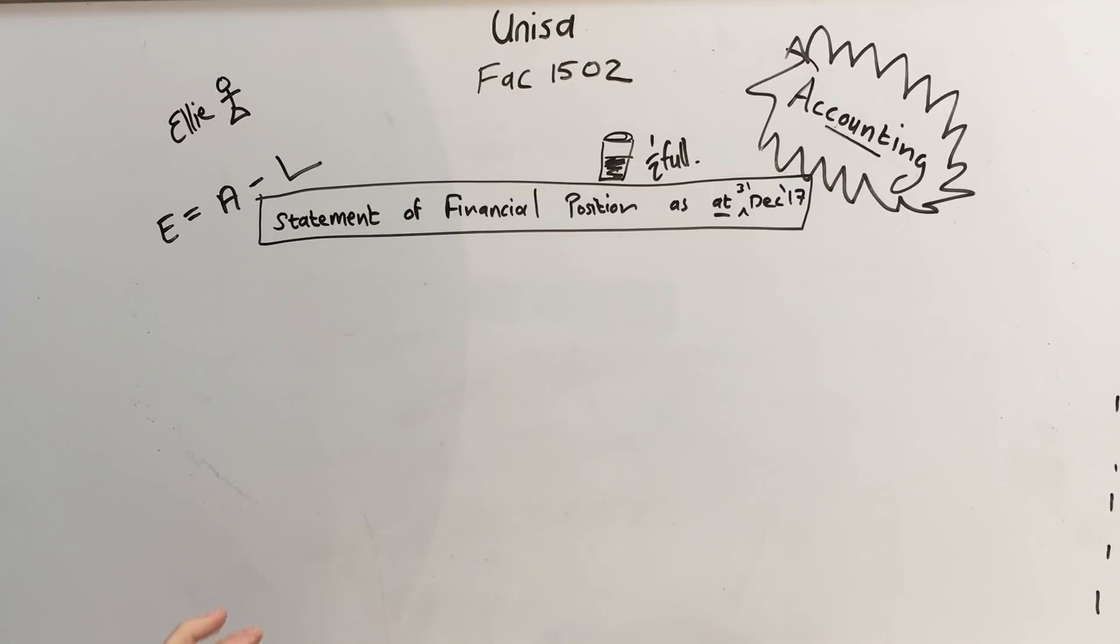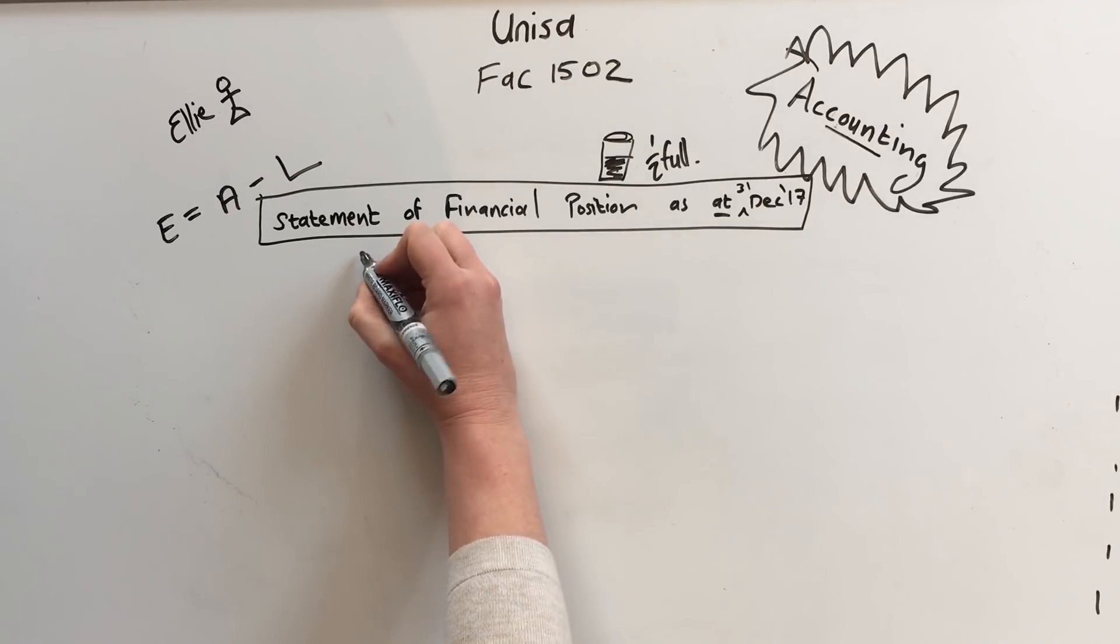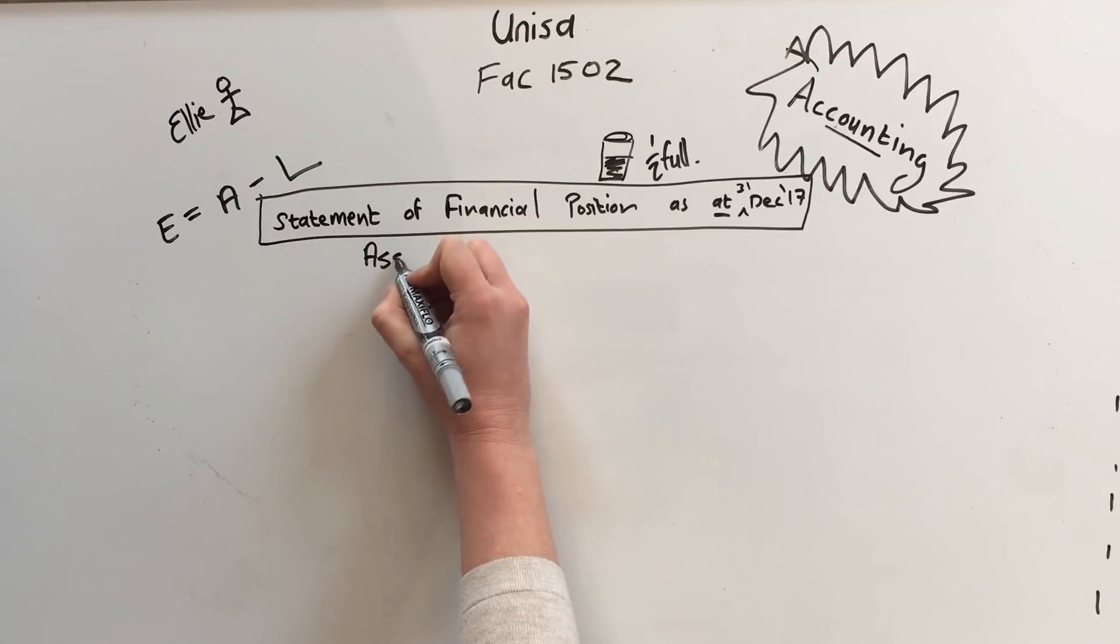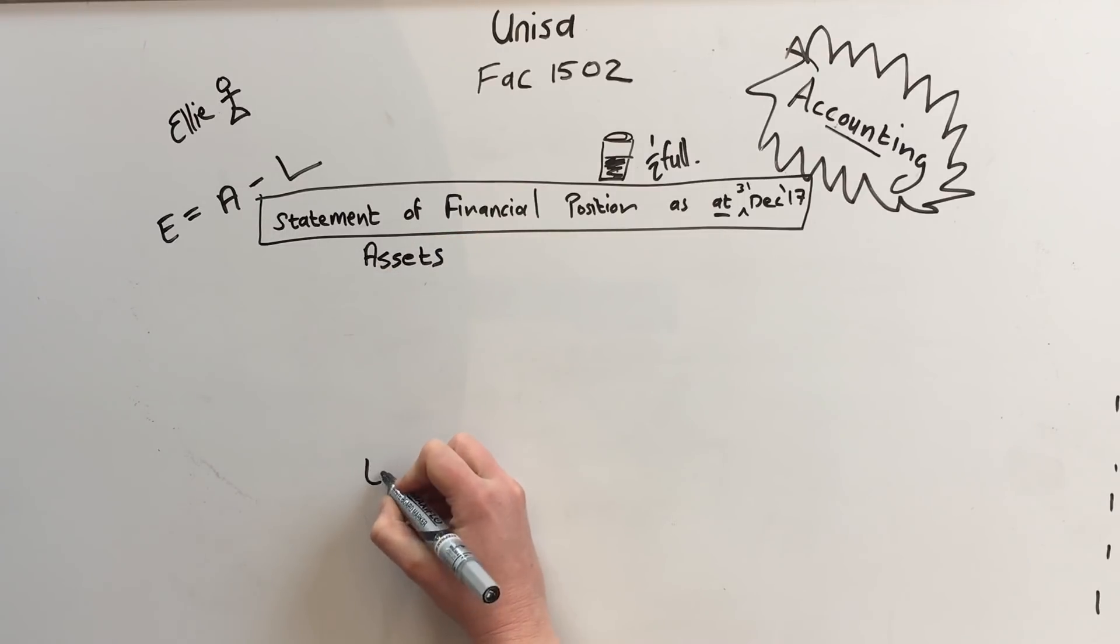Now to read this statement there's a skeleton that never changes and it makes it so much easier to understand. So this statement will always have assets at the top and liabilities at the bottom.